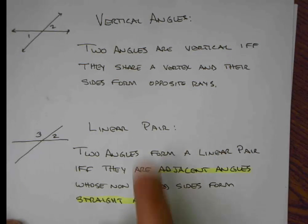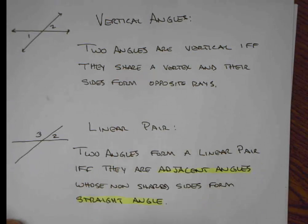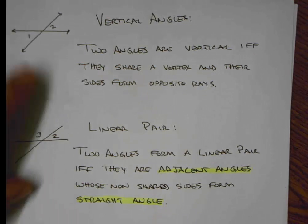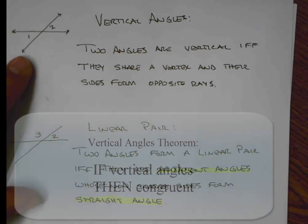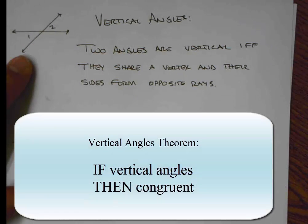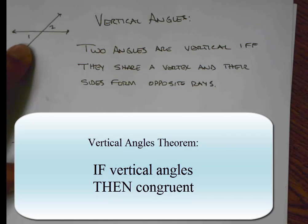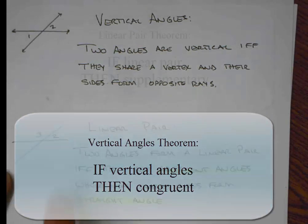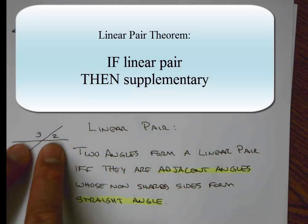As we learned last class, vertical angles and linear pairs have a consistent relationship. Our vertical angles theorem says: if two angles form vertical angles, then their measures are equal, or they are congruent. Whereas for a linear pair, if two angles form a linear pair, then they are supplementary.